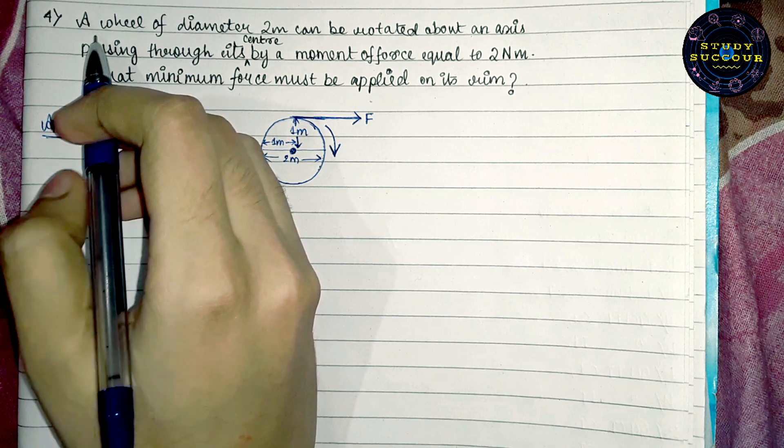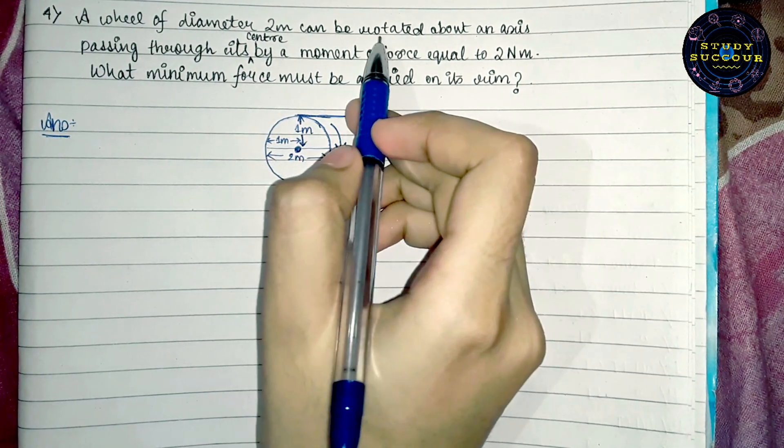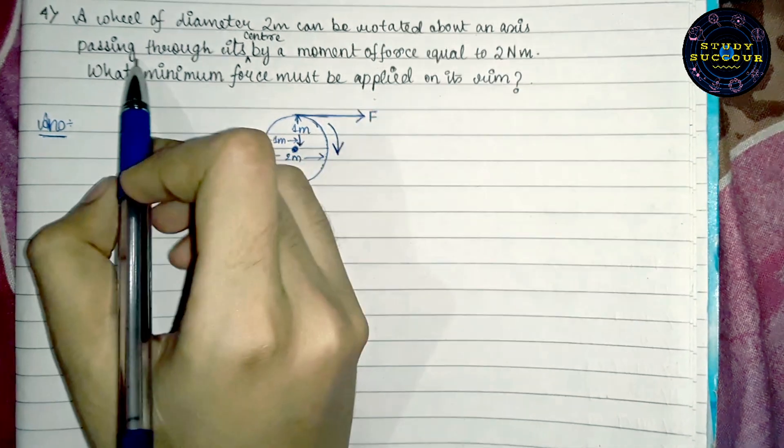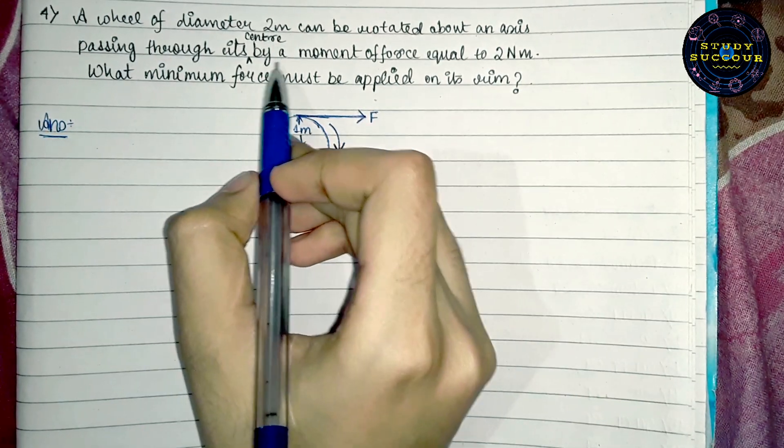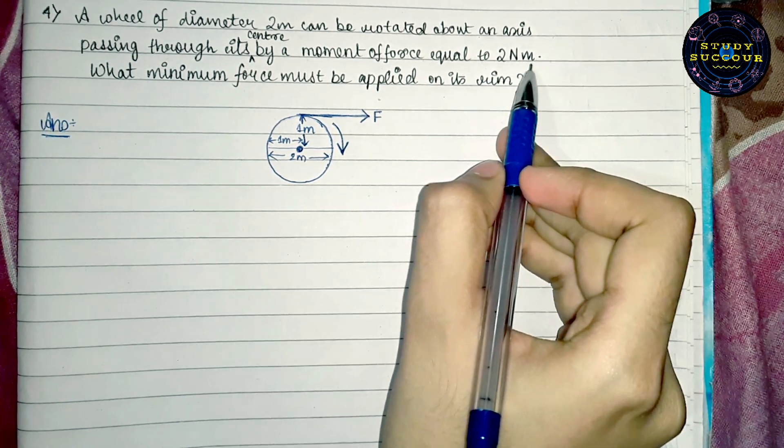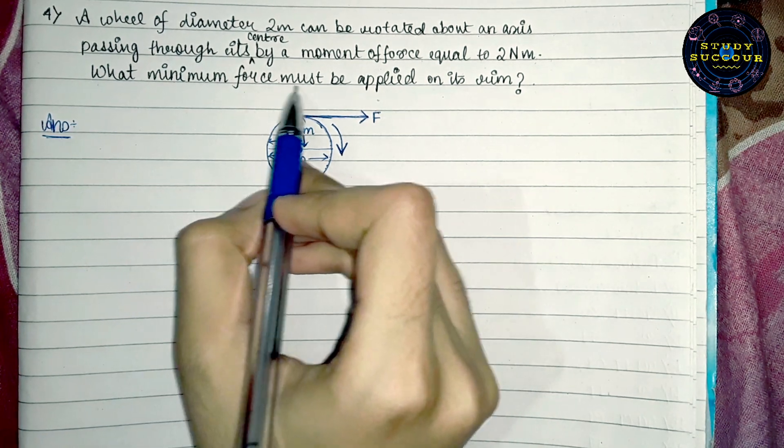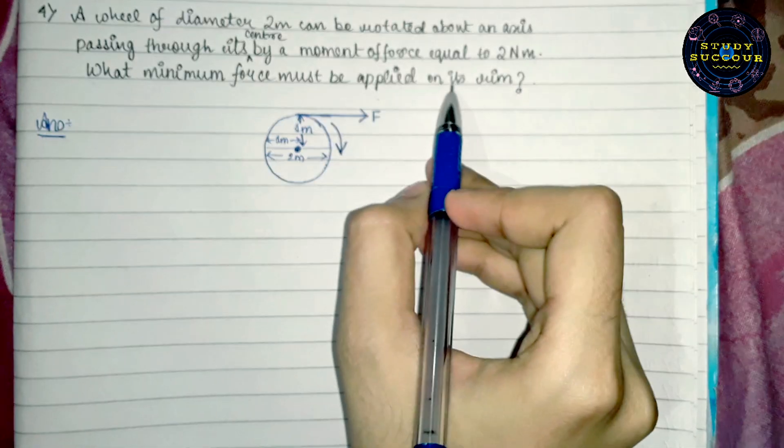The question goes that a wheel of diameter 2 meter can be rotated about an axis passing through its center by a moment of force equal to 2 newton meter. Then, what is the minimum force that must be applied on its rim?